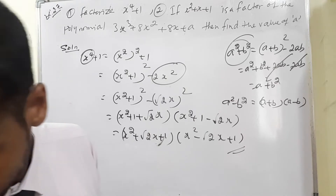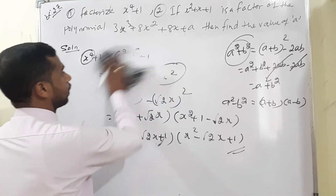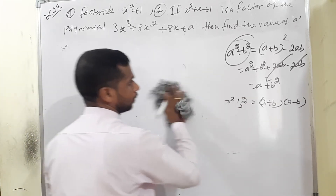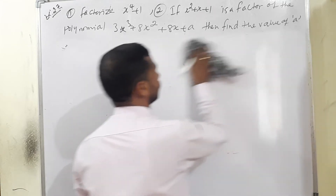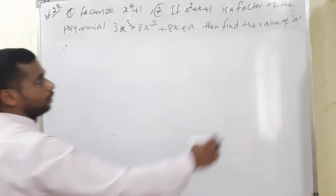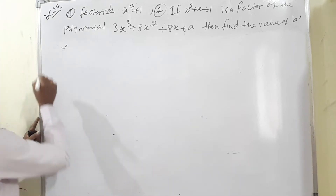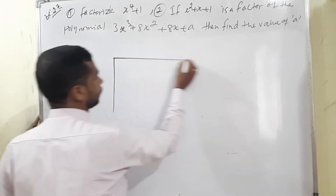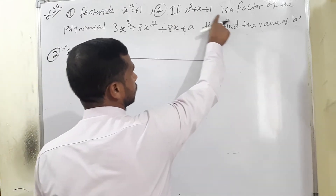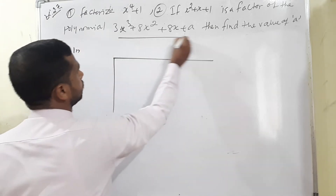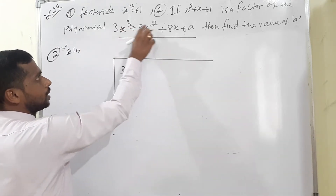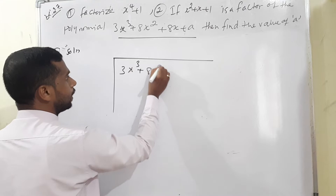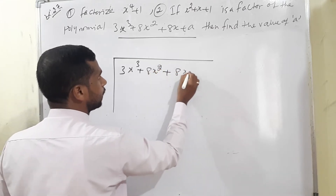Moving to question number 2: find the value of a, given that x²+x+1 is a factor of the polynomial 3x³ + 8x² + 8x + a. We use the division method. Dividing 3x³+8x²+8x+a by x²+x+1: the first term gives 3x. So 3x×(x²+x+1) = 3x³+3x²+3x.